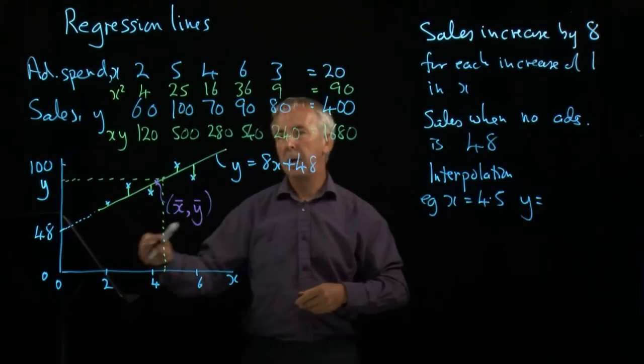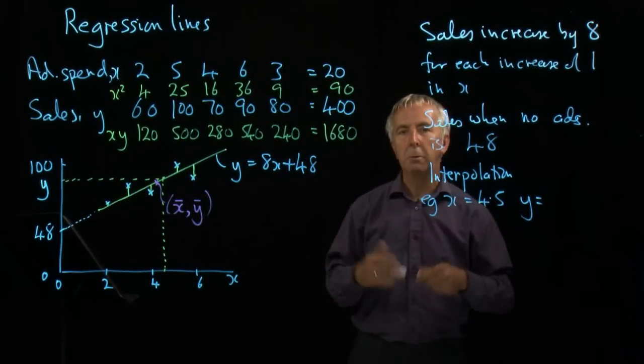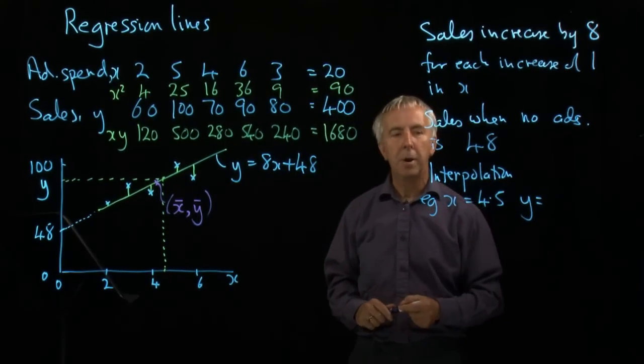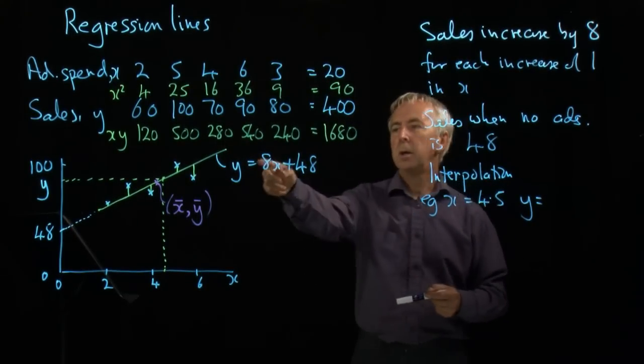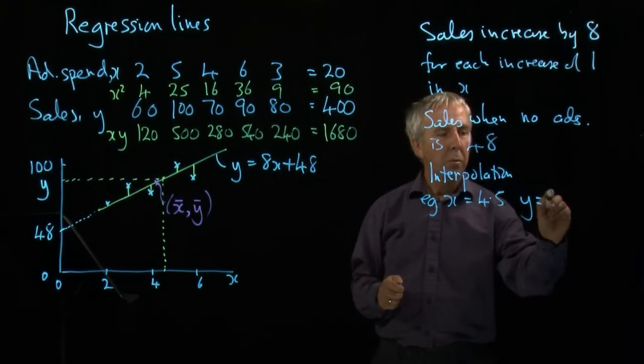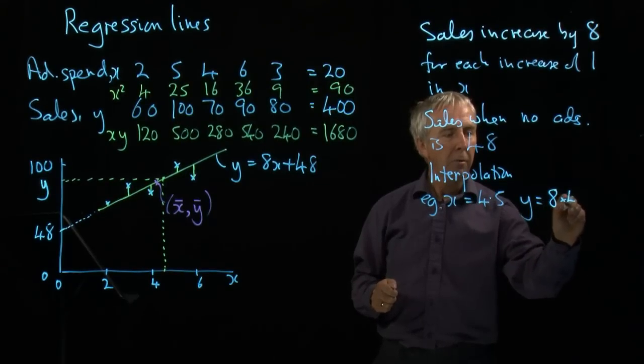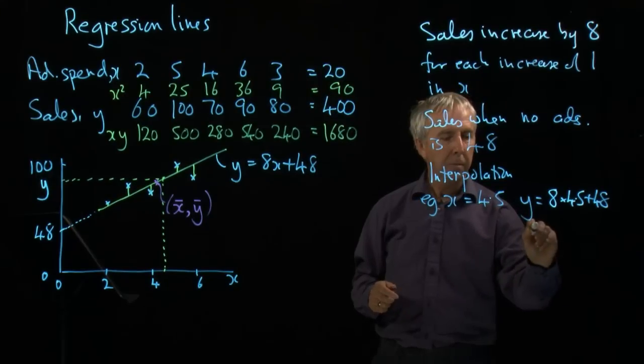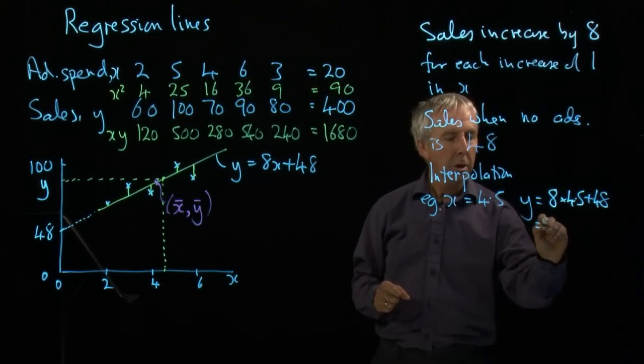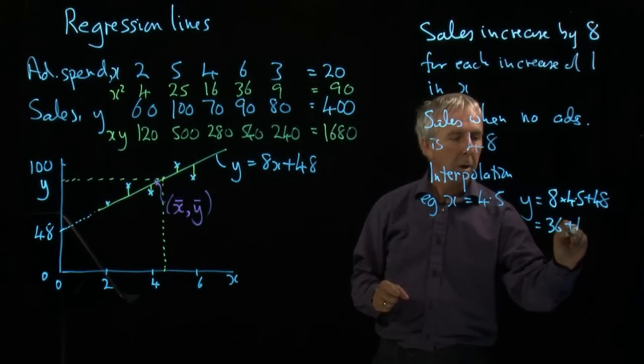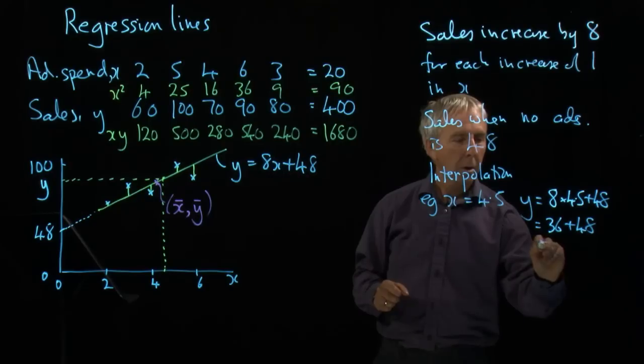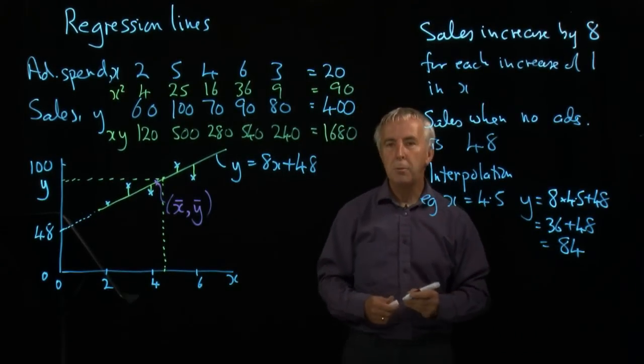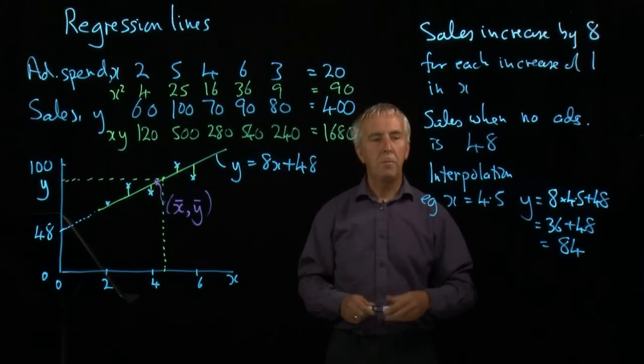This is not a perfect line. There are errors, so it's not going to give an exact answer, but it will give us a rough idea. So if I spend £4,500 on advertising, the resulting sales will be 8 times 4.5 plus 48, which is 36 plus 48, which is 84. That's my prediction, if I spend £4,500.